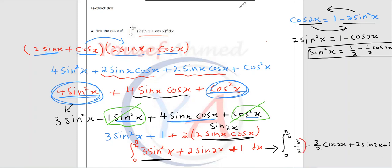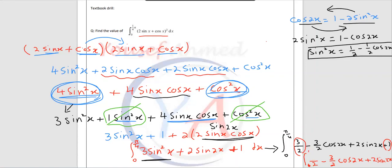So you need to integrate and then do the replacement. Here if you want to collect the like terms first: 1, 3 over 2 and 1 — it will be written as 5 over 2. Minus 3 over 2 cos 2x, plus 2 sin 2x. And then integrate from 0 to π/4. So the integral will be: 5 over 2, minus 3 over 2 cos 2x, plus 2 sine 2x, all dx.